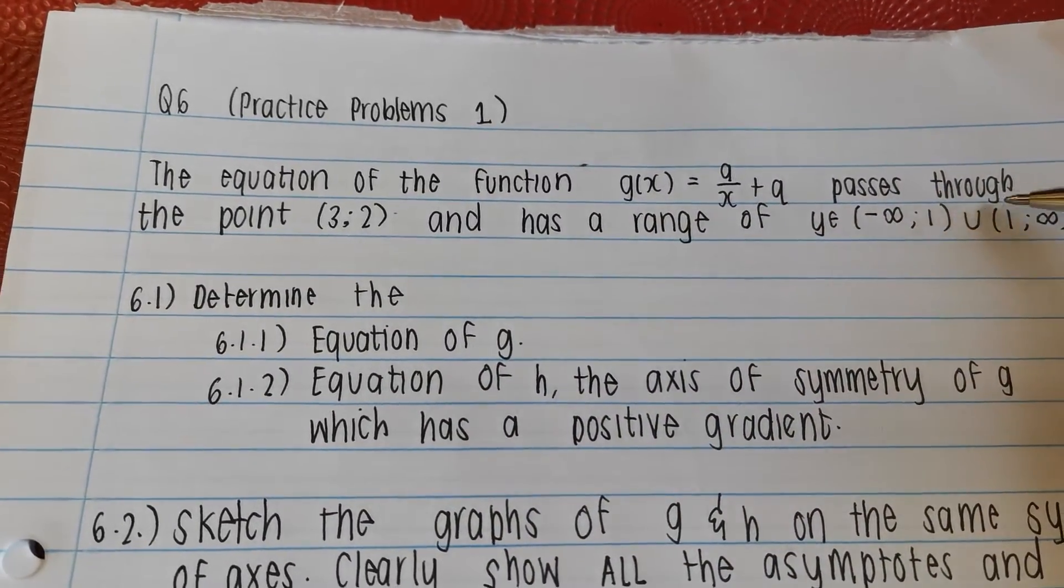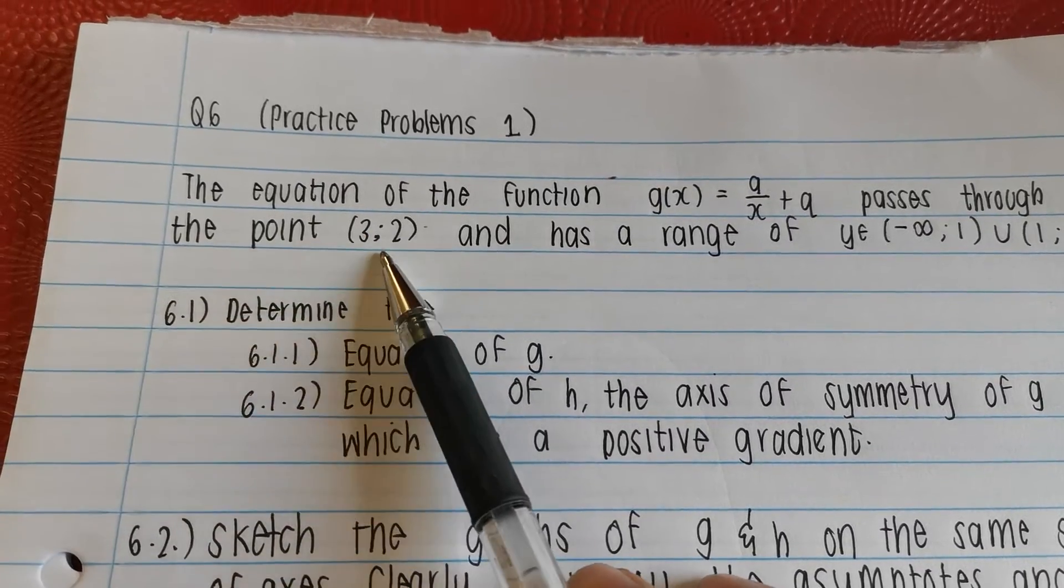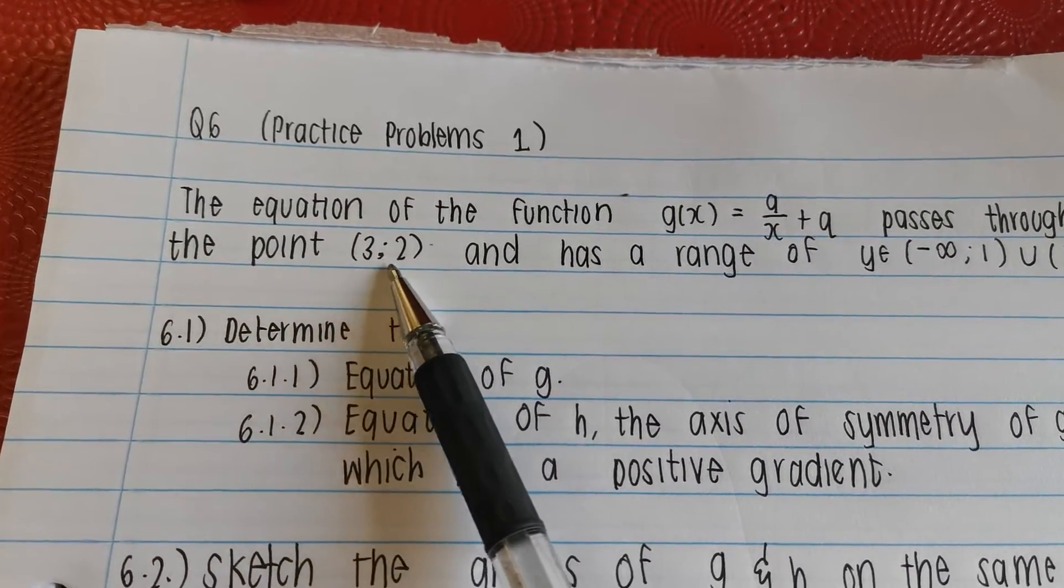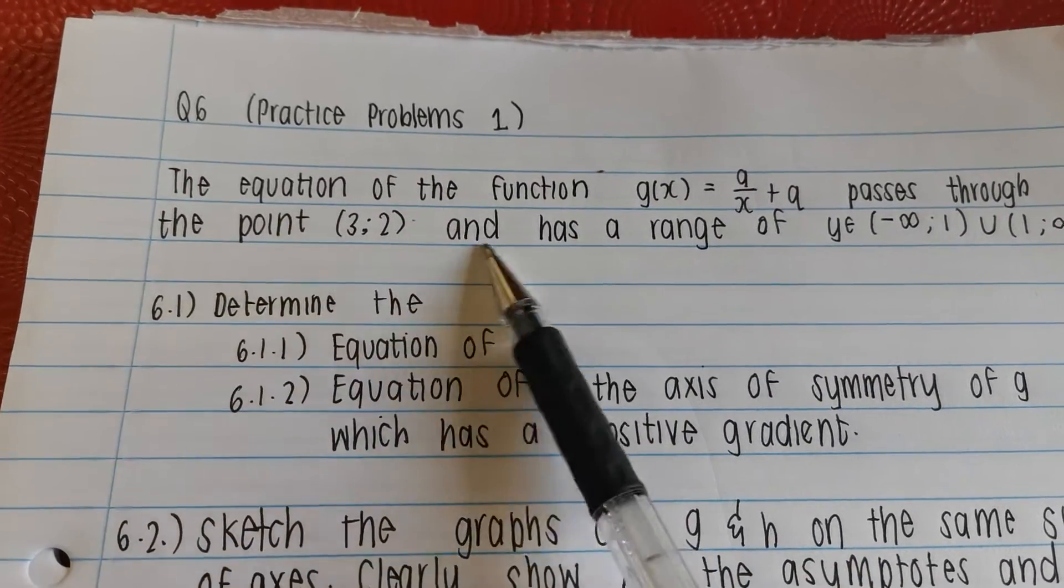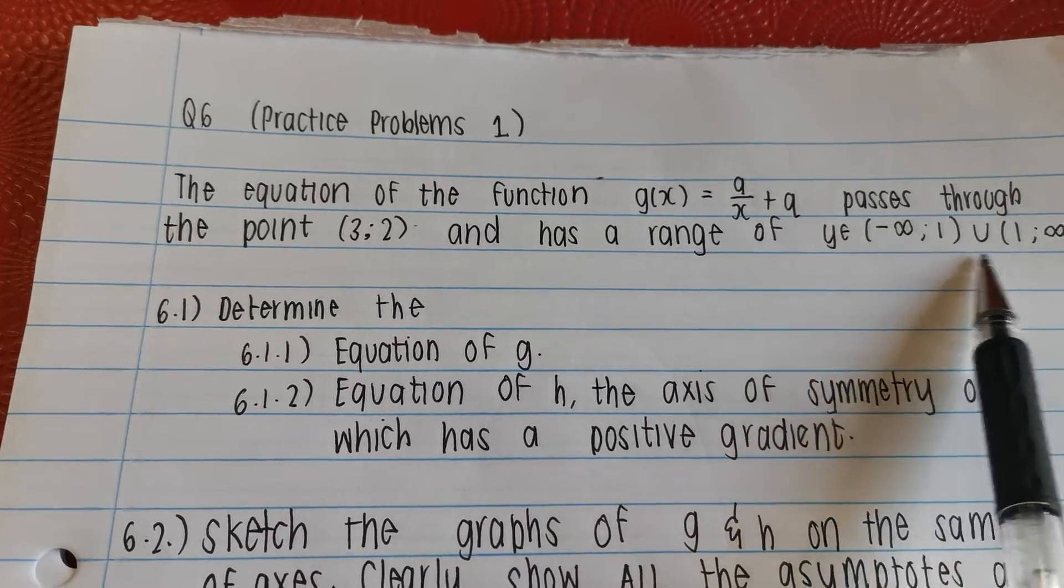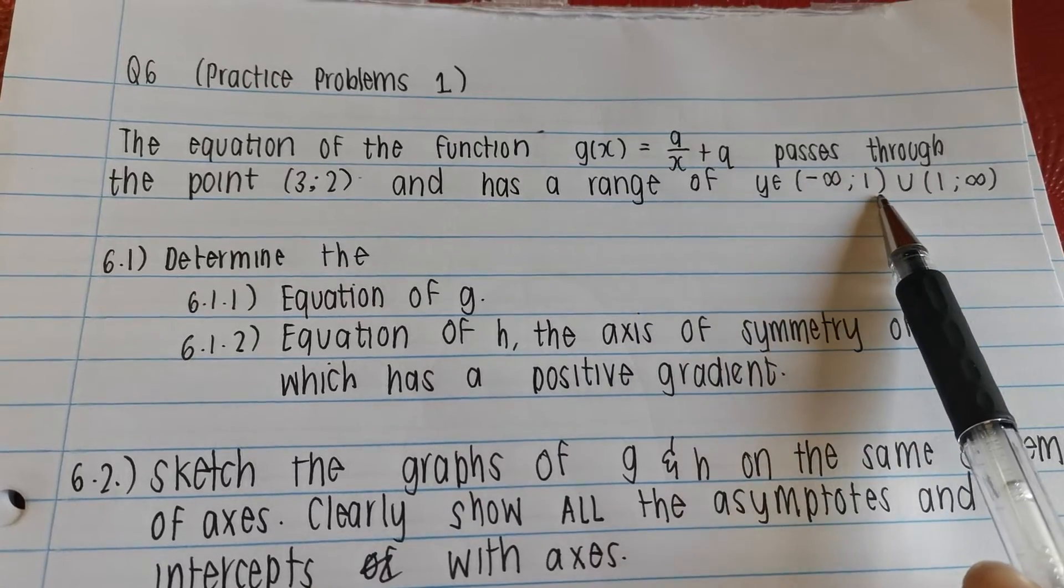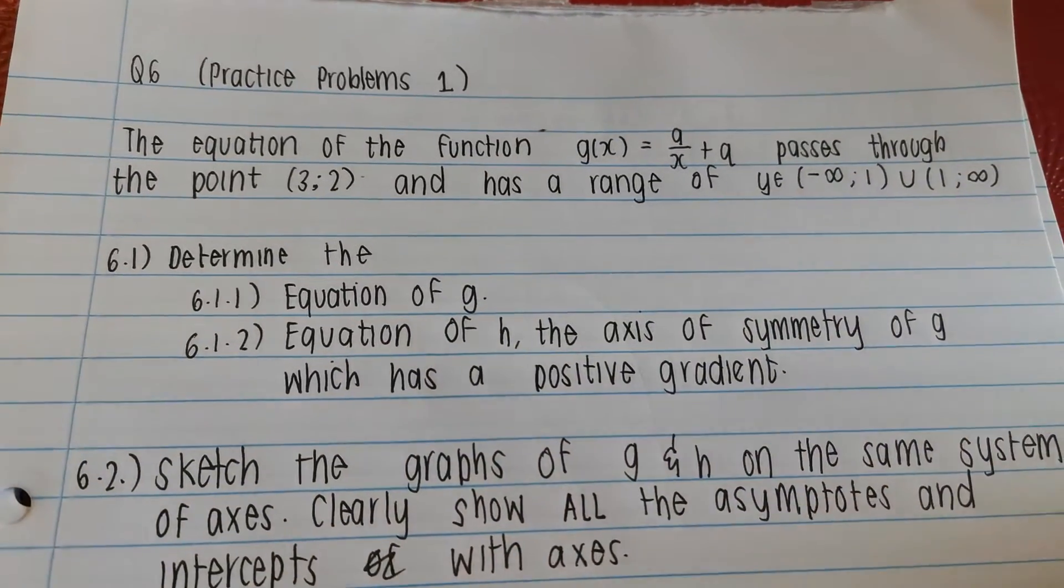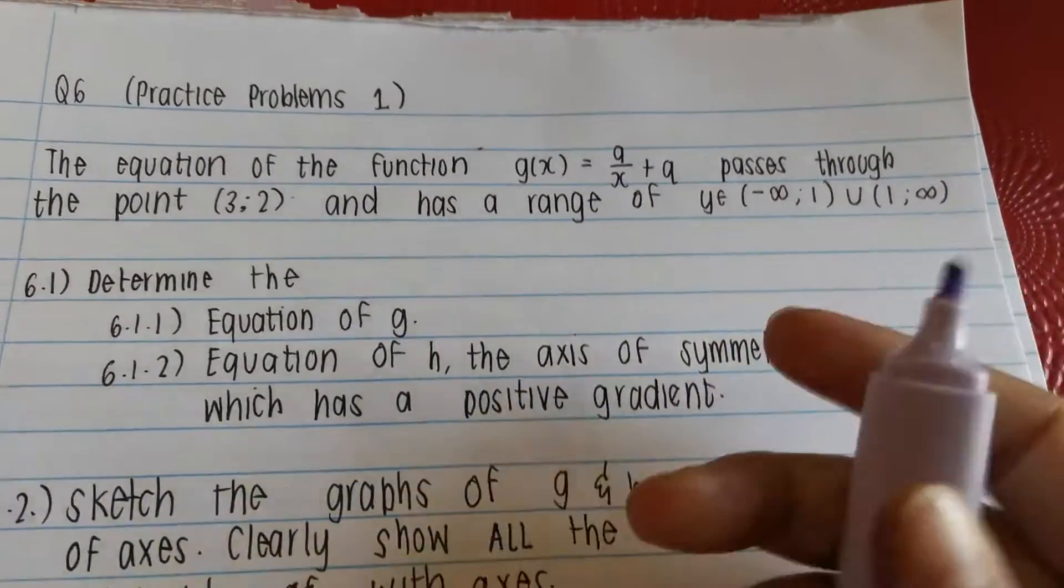It says this hyperbola passes through the point (3,2). We know that this satisfies the equation. And if they ask us to determine the equation, we're going to substitute this into the place of x and y. It says it has the range of y as an element of all the way from negative infinity till 1, or from 1 till infinity. What does this mean? This gives us a clue about its asymptote.